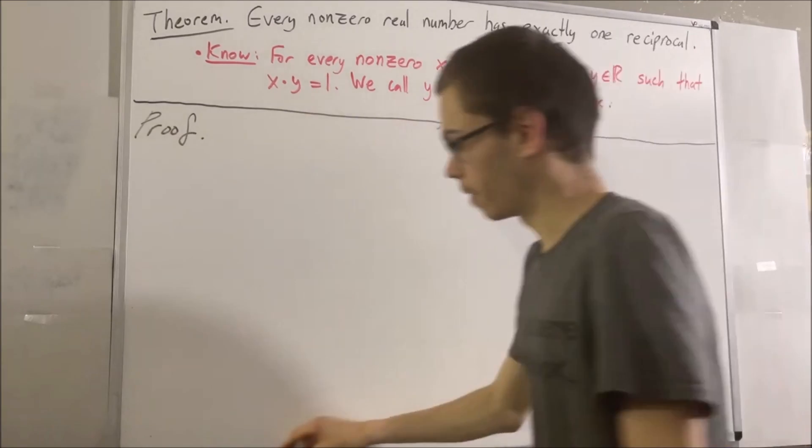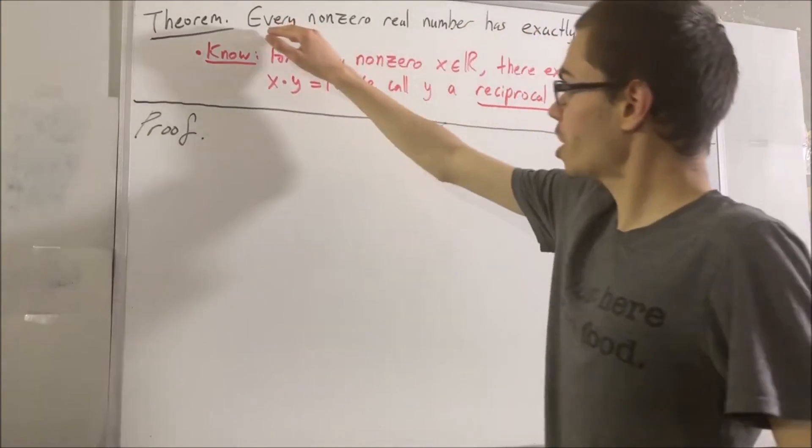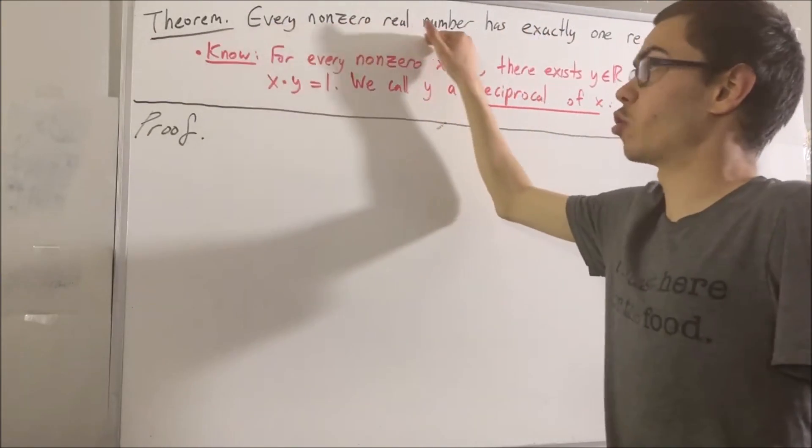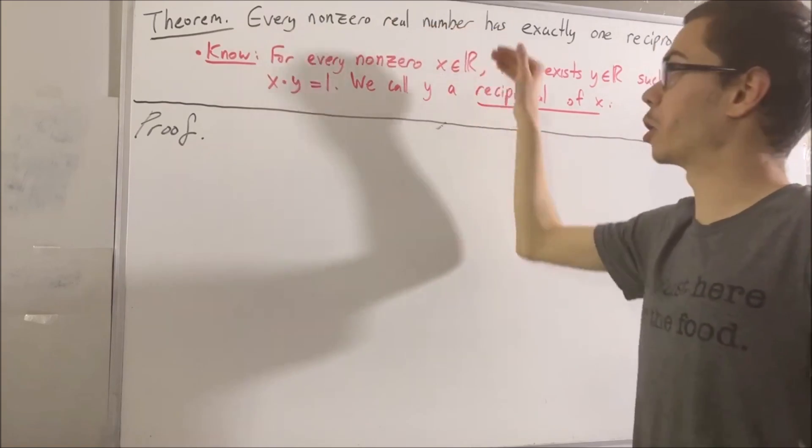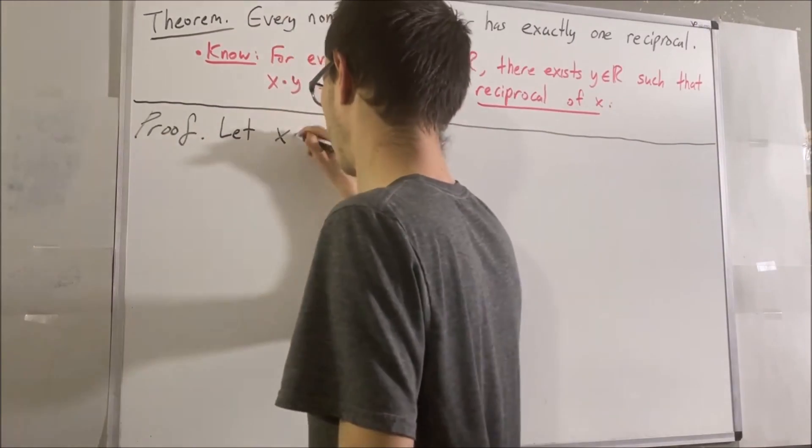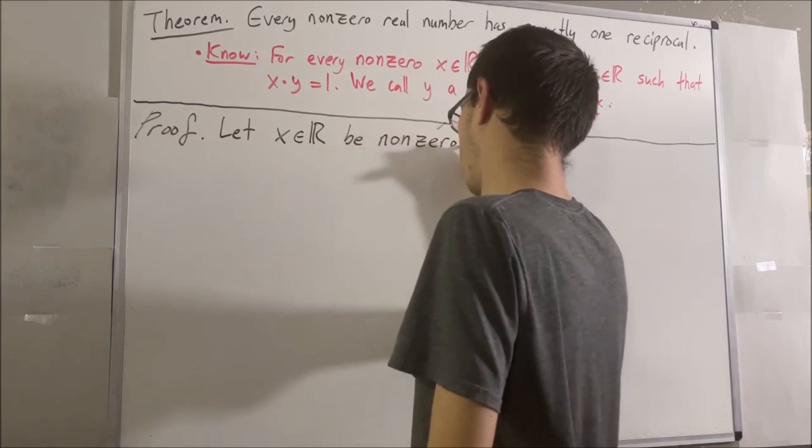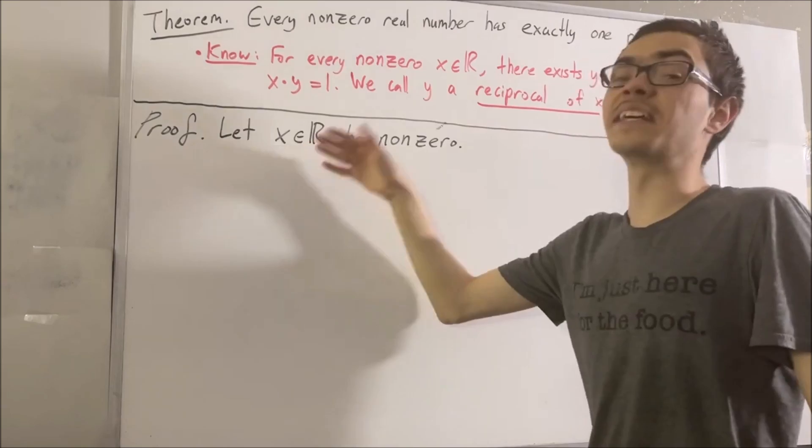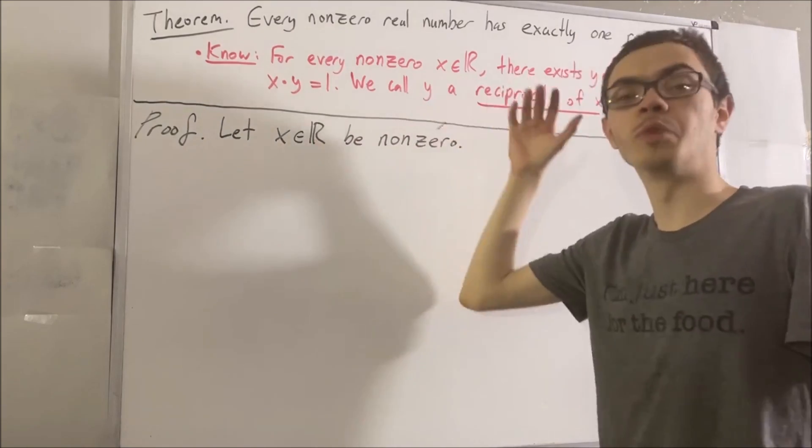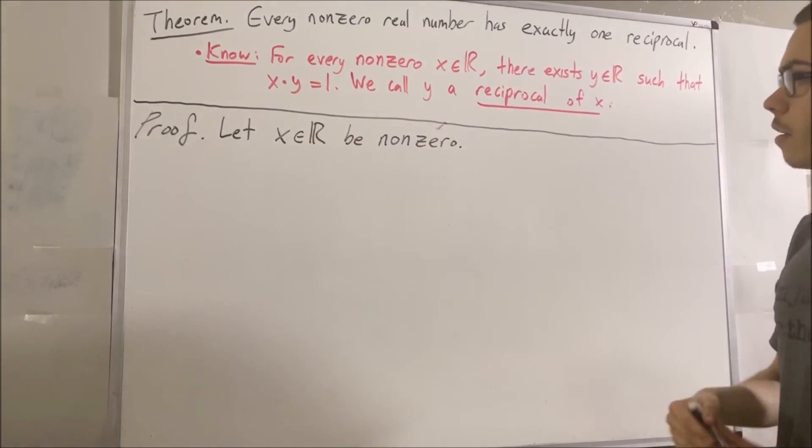Now, let's begin the proof. We're trying to prove a statement about every non-zero real number. So give me an arbitrary non-zero real number. I'll call it x. The whole goal now is to deduce that x has exactly one reciprocal.